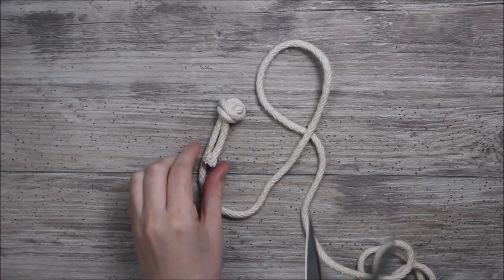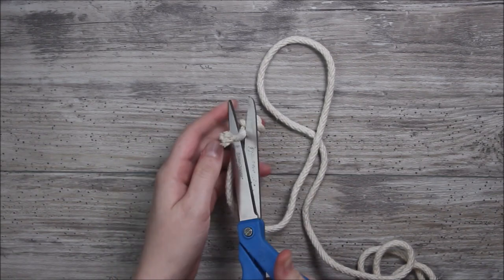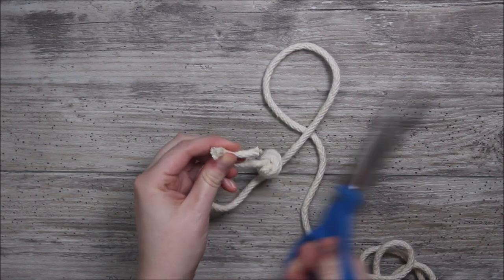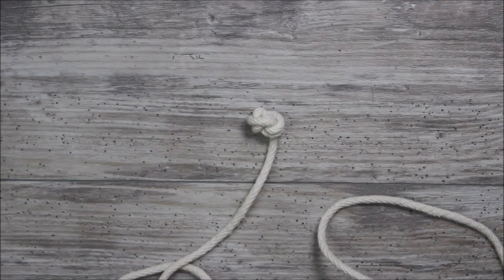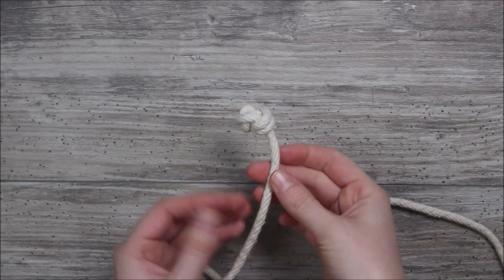And then what you can do is just take a pair of scissors and cut off the little tail that's sticking out. Just trim it right off. And now it's time to actually tie the monkey fist knot.